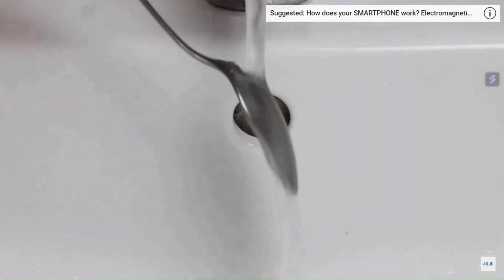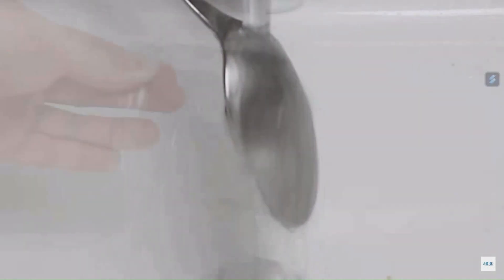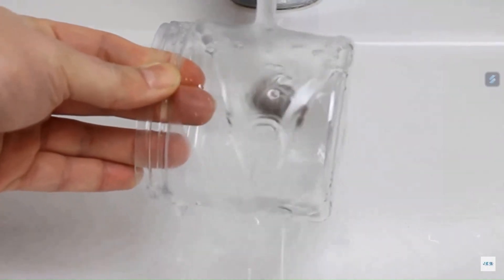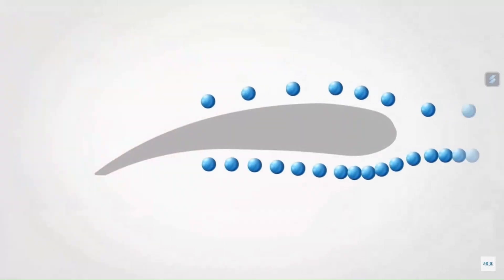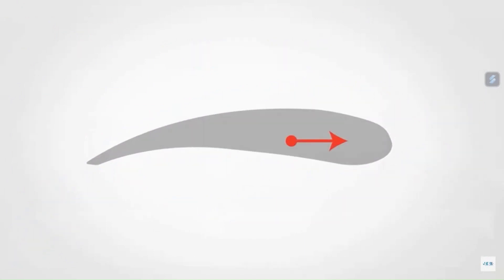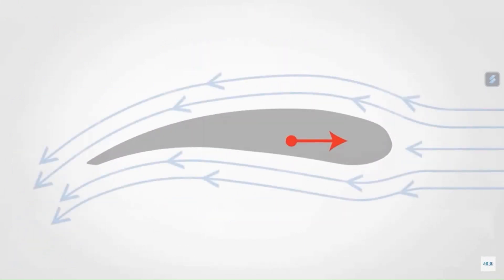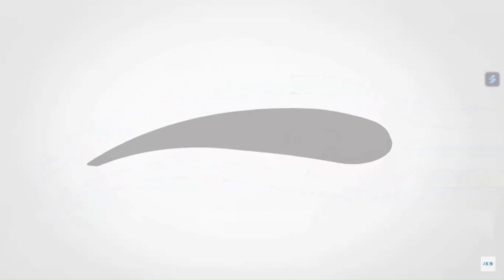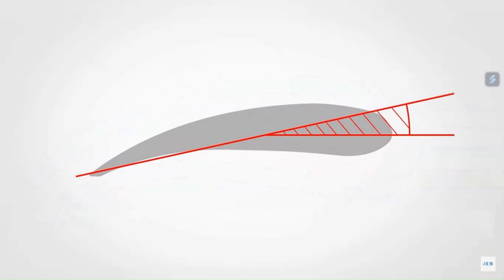One can use a simple experiment for this Coanda effect. If you use a tap, you can use the tap. There is a glass. If you look at the surface of the glass, you can use the surface. This phenomenon is called the Coanda effect. This is the fluid. If you use the airfoil, you can use the Coanda effect.